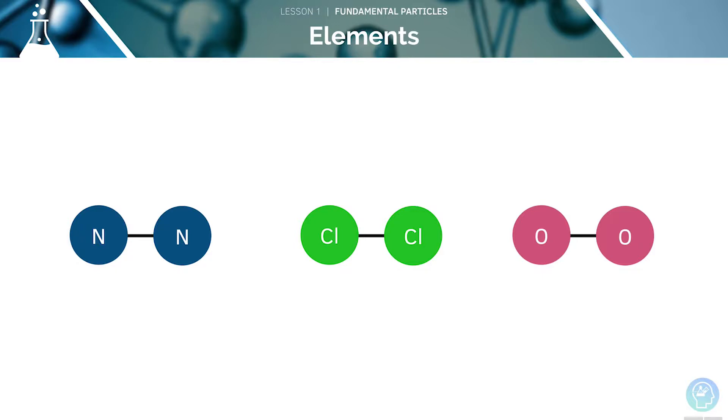Firstly, we will be looking at the different types of elements. Here, we can see three kinds of elements. The first is nitrogen. The next one is chlorine and the final one is oxygen.